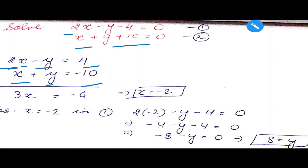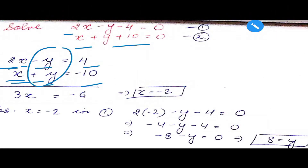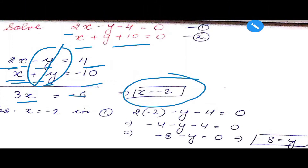The x coefficients are 2 and 1 — not the same yet. Now checking y: the coefficient is minus 1 here and plus 1 there. We are done with y — the coefficient is the same (magnitude 1) and the sign is opposite. There is no need to multiply any equation. Adding: plus y and minus y cancel. 2x plus x gives 3x, and 4 minus 10 equals minus 6, so x equals minus 2.